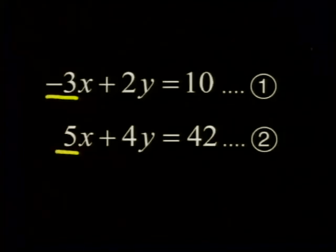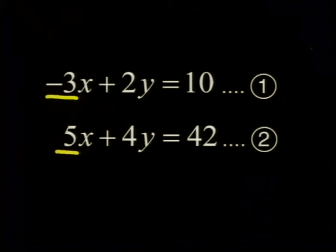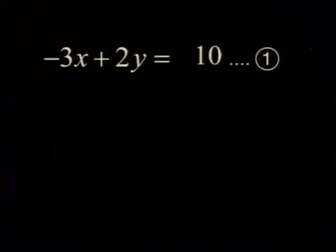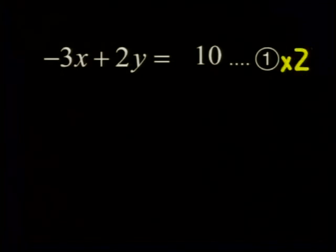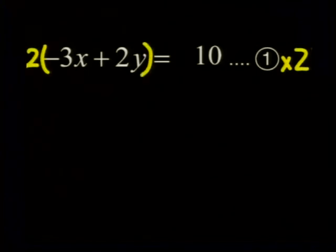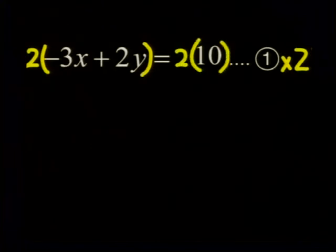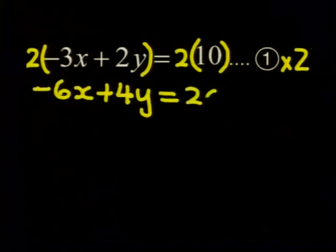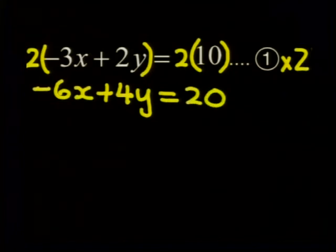Have a look. If I subtract one equation from the other, then I will have 4y minus 4y. And that leaves me with no y's. That's what I want. So I multiply each term in the equation by 2. This gives me 2 multiplied by minus 3x plus 2y is equal to 2 multiplied by 10. This simplifies to minus 6x plus 4y is equal to 20. Let's call this equation number 3.